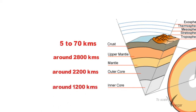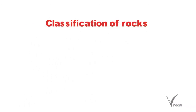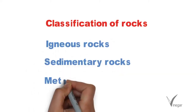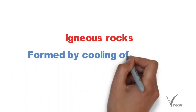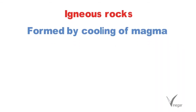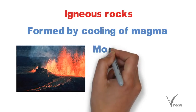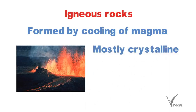Let's talk about the classification of rocks. Rocks are classified into three major groups: igneous, sedimentary, and metamorphic. Igneous rocks are formed by the cooling and solidification of molten rocks or magma. This magma comes from inside the Earth's crust. Igneous rocks are mostly crystalline in structure.